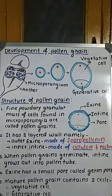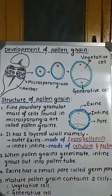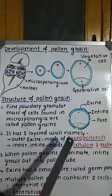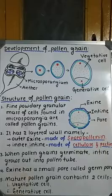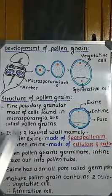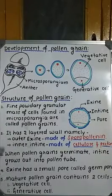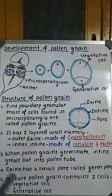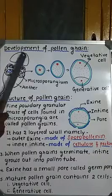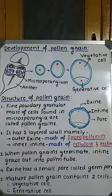Now I'm going to teach you about pollen grains — what is the meaning of pollen grain and where they are produced. Before that, I want to tell you about stamen. Stamen is the main reproductive structure of the flower. This figure is showing a typical stamen.